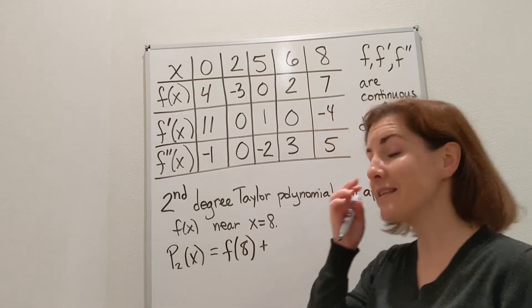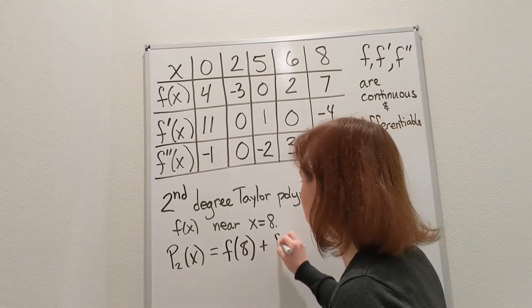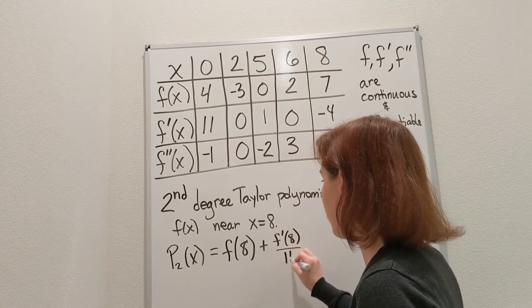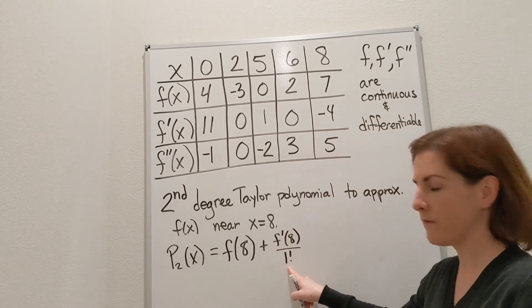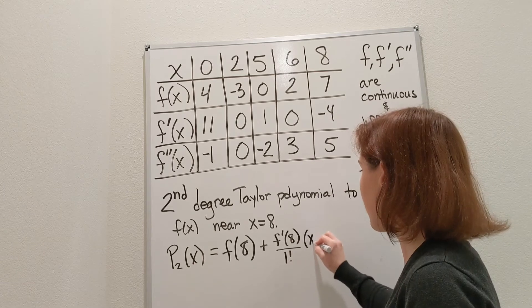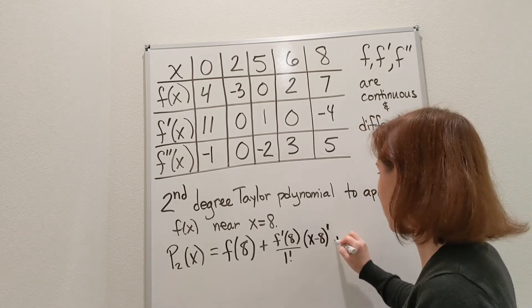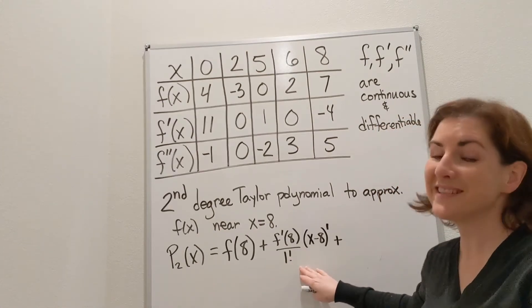I'm going to add to that the first derivative of f at 8, divided by 1 factorial, and then we have x minus 8 to the 1. That right there is our tangent line.